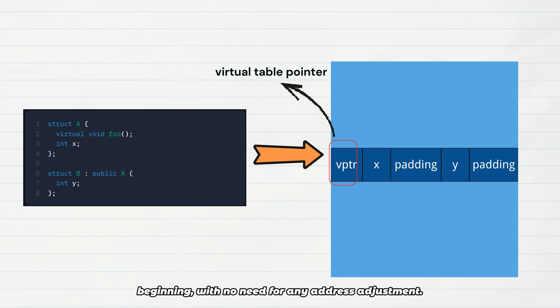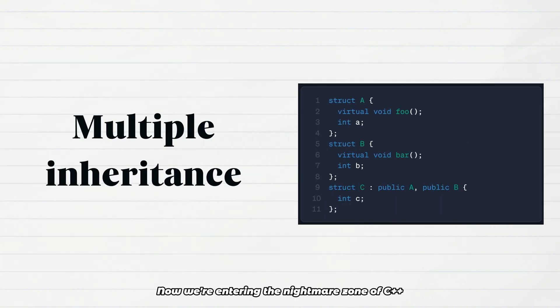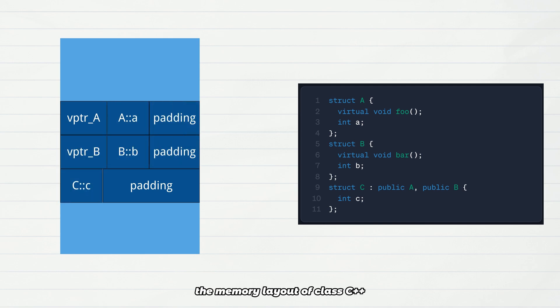Now we're entering the nightmare zone of C++: multiple inheritance. At this point, the memory layout of class C becomes a two-segment structure. There are three key facts hidden here, which are also the core challenges of multiple inheritance.